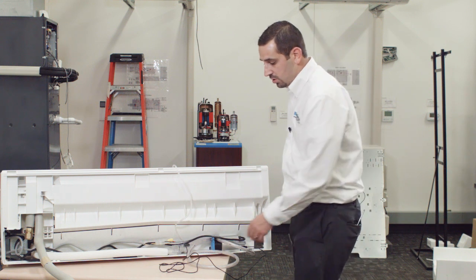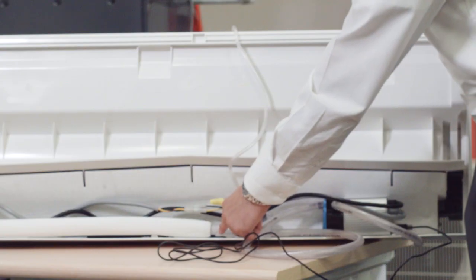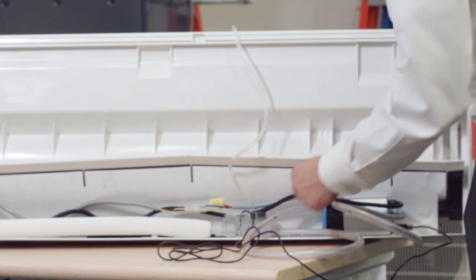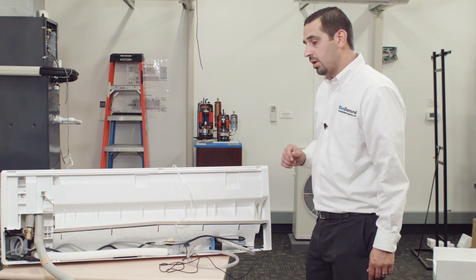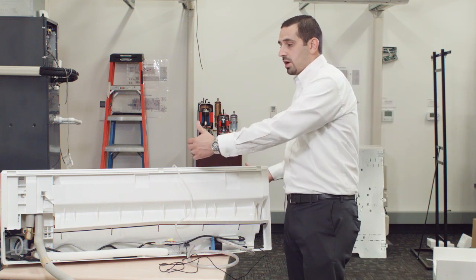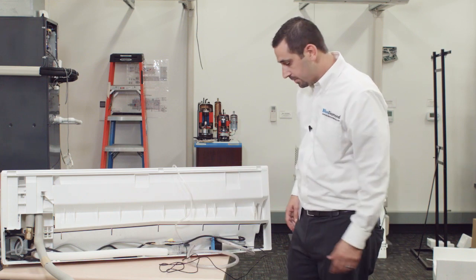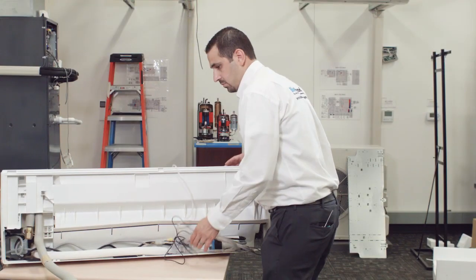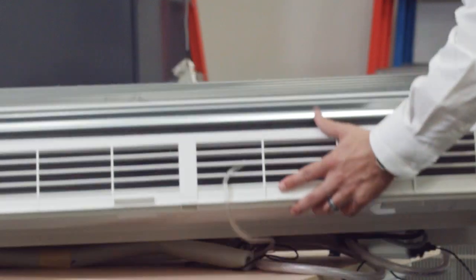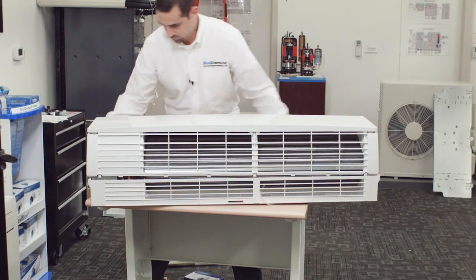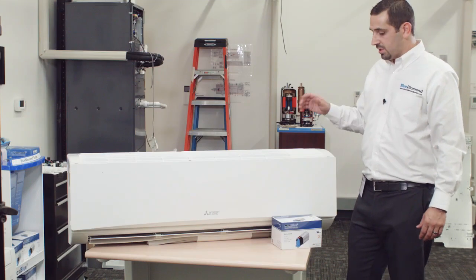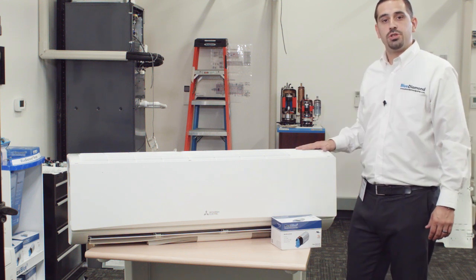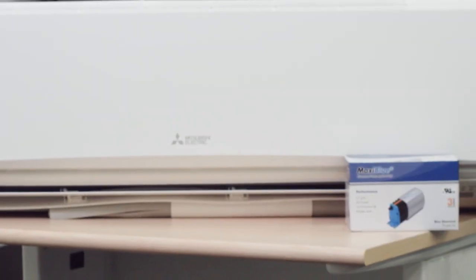Lastly, let's just make sure that when we are installing these that we are securing all of our connections with the proper hose clamps or the wire ties that we provide with the pump. Last but not least, we'll go ahead and button everything back up and we'll show you a finished product. I'm Jordan Wingard and that was the install of a Maxi Blue on a Mitsubishi P-Series high wall unit. Thank you.